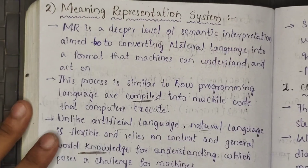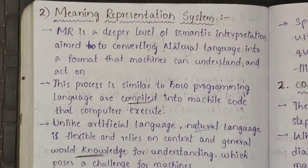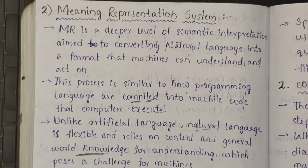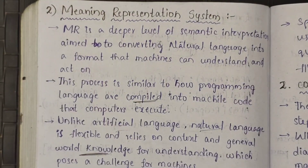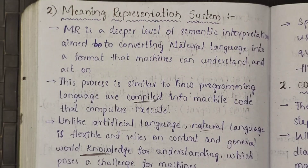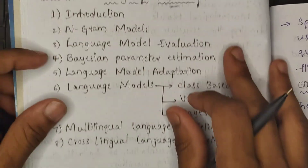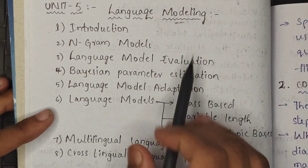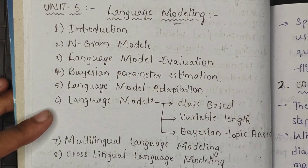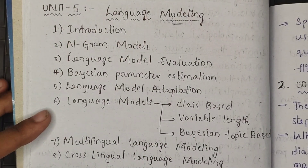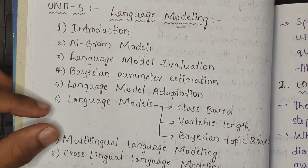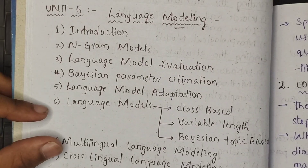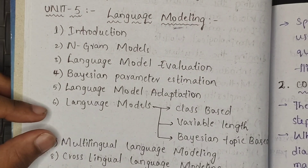This completes the fourth unit — Semantic Parsing 2. We covered two concepts: Predicate Argument Structure and Meaning Representation System. In the next video, we will talk about language models and language modeling. Please share this video with friends and family. If you have any subject notes requests, please comment. Don't forget to subscribe to our channel. Thank you for watching.